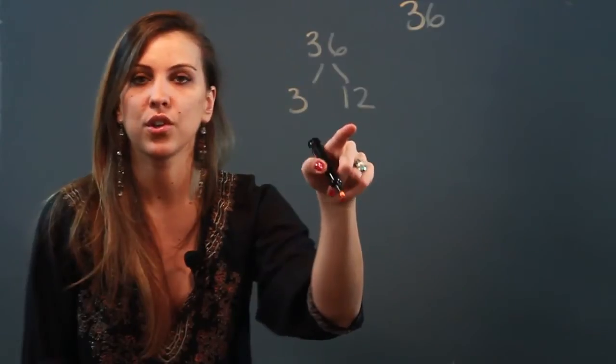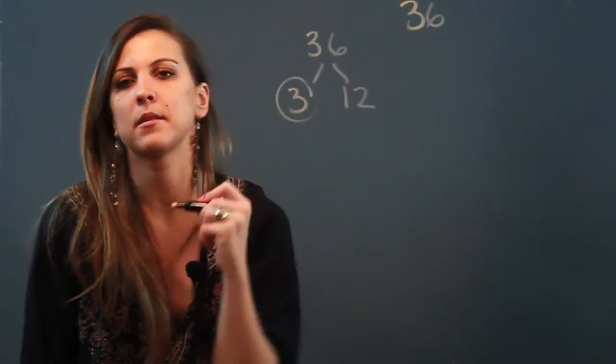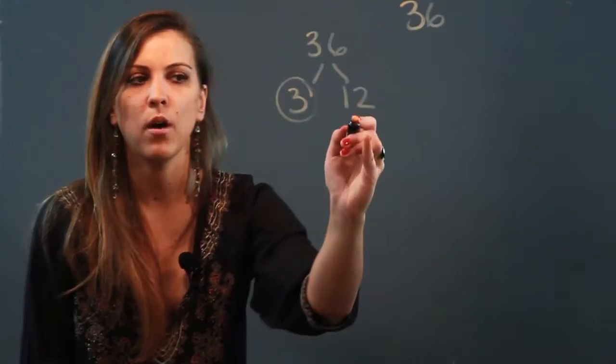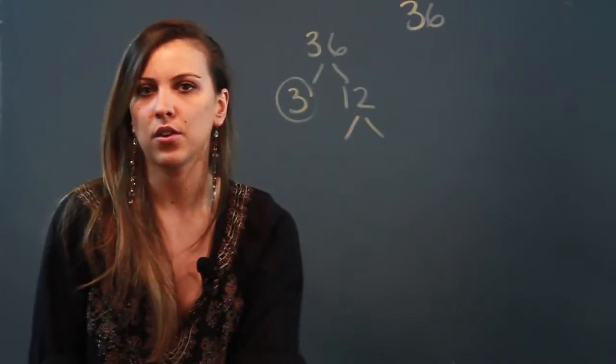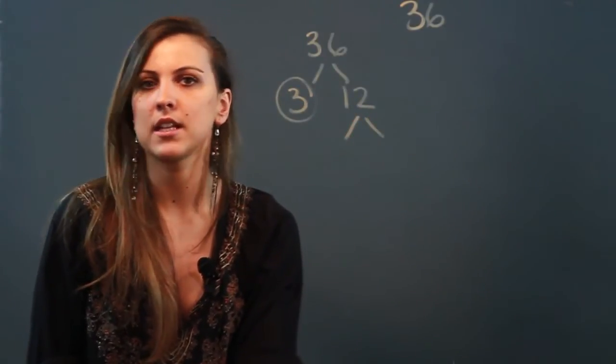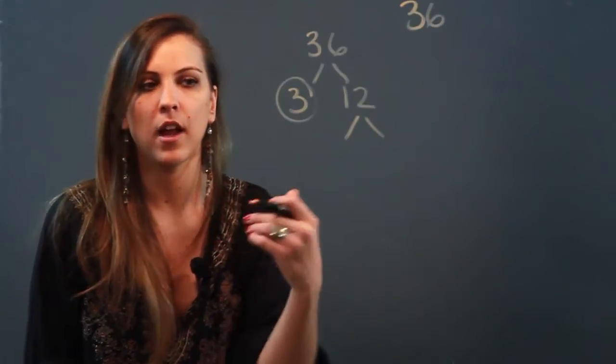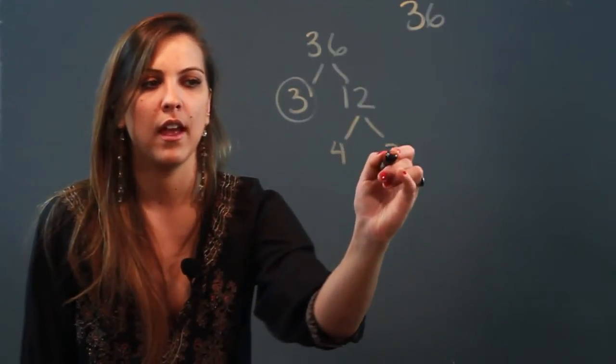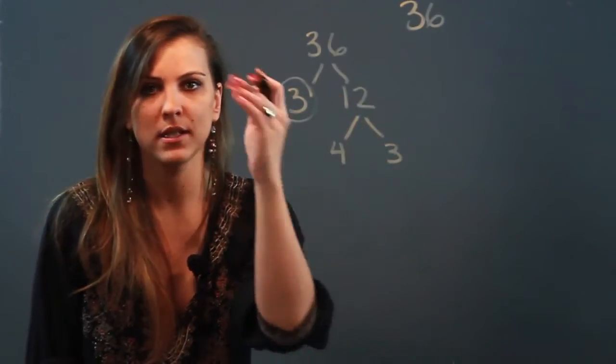Once I break it up, I'm going to circle any numbers that I see that are prime, and 3 is prime so I'm going to circle it. I'm going to move over to 12 and continue to break it down into factors. So now you're thinking of two numbers that go into 12, and the numbers that come to mind for me are 4 and 3.